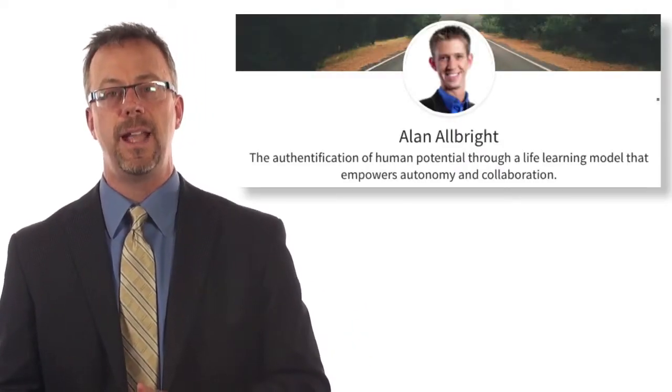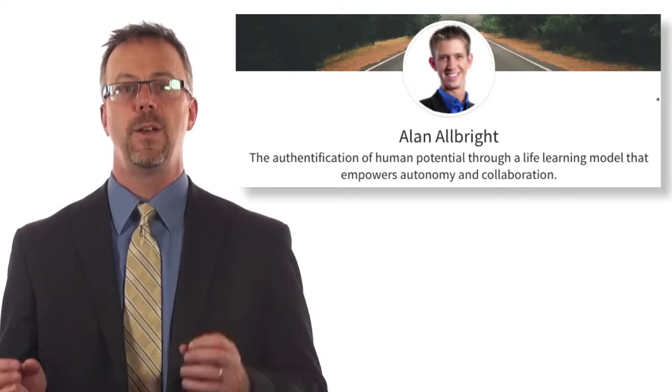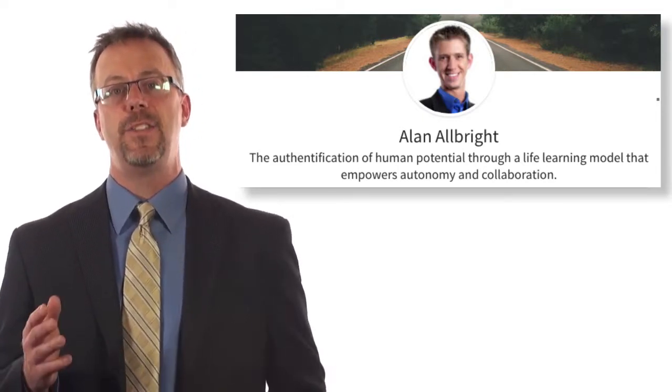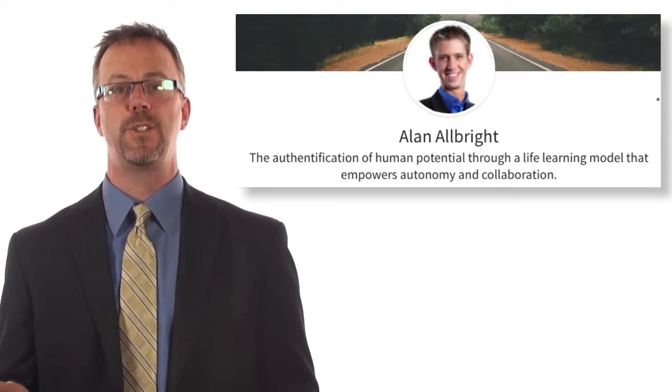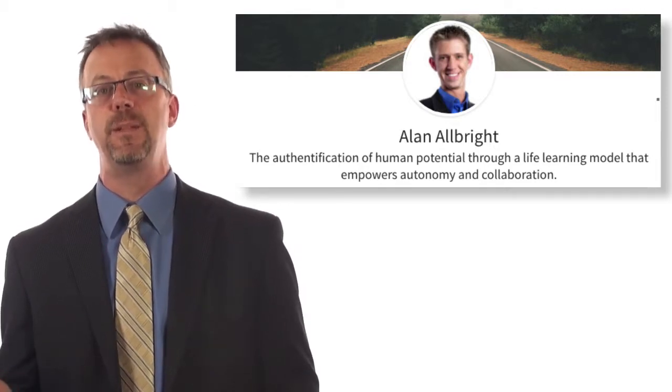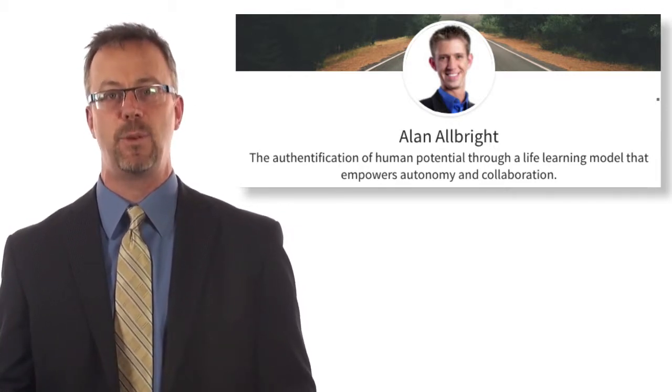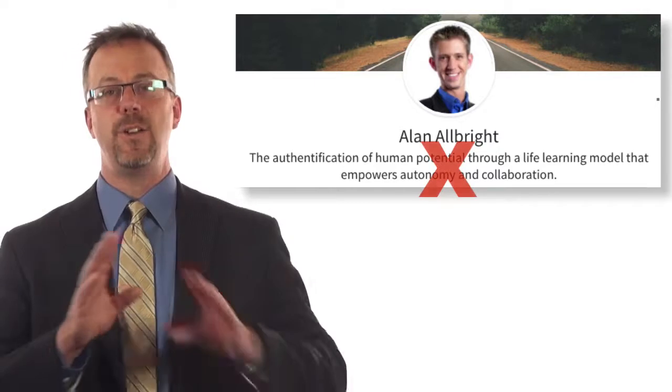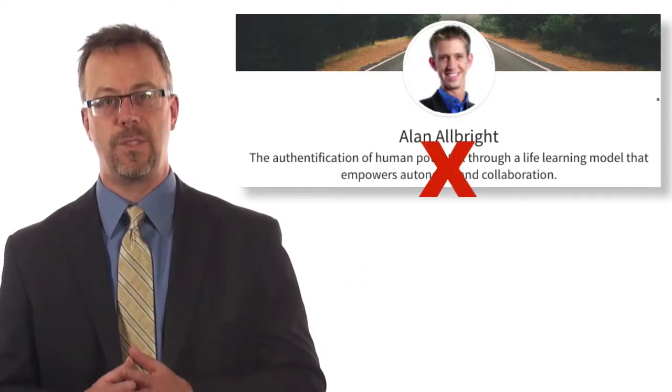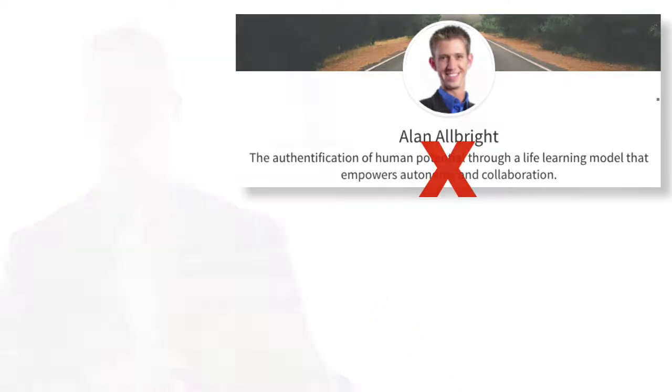Now the third sample — I'll be honest, I think this is insane. This is an actual headline someone put in and it's not what you want to do. Right underneath their name they said: 'The authentication of human potential through a life learning model that empowers autonomy and collaboration.' I don't even know where to begin pointing out what's wrong with that. You don't even want to put a sentence in there — you want to keep it really brief and to the point.